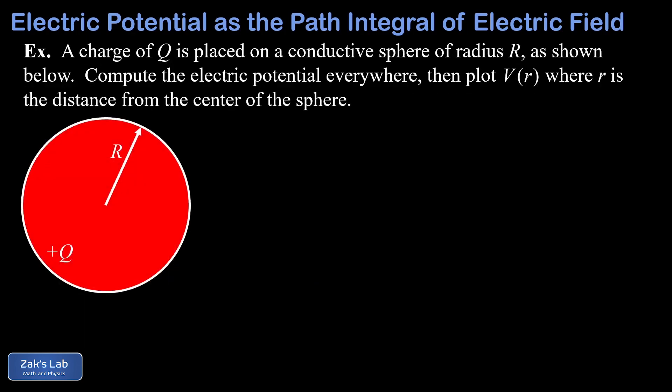In our next example, we have a charged conducting sphere with a charge of plus Q and radius capital R. We're asked to compute the electric potential everywhere — inside the sphere and outside — and then plot the potential as a function of r, the distance from the center. We already know that for a conductor, all the charge resides on the surface, the electric field is zero inside the conductor, and the field around this spherical conductor is the same as that of a point charge at the center — all results from Gauss's law. Since we're finding the potential at each point rather than just a potential difference, we pick a reference point; infinity is a natural choice where the potential is zero, consistent with using zero potential energy as r goes to infinity.